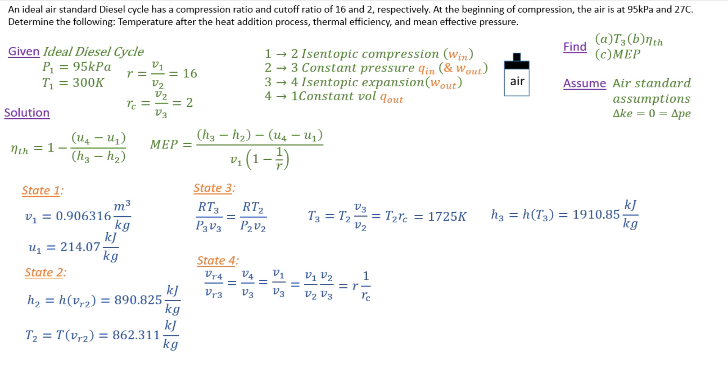So I'm going to go ahead and pull off VR_3 in my ideal air tables, and I've got 4.545. And when I plug that into my isentropic relationship at state 4, I get a VR_4 of 36.36.